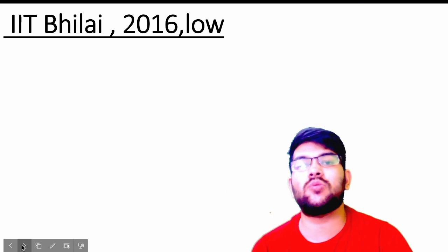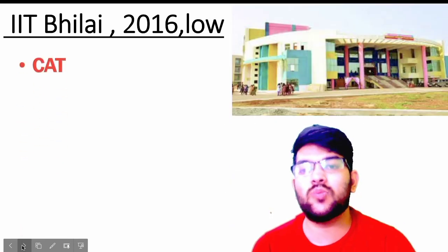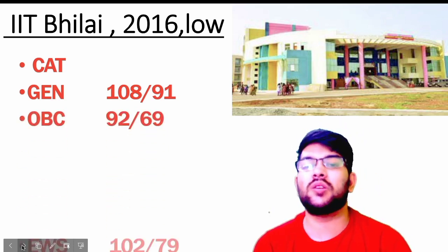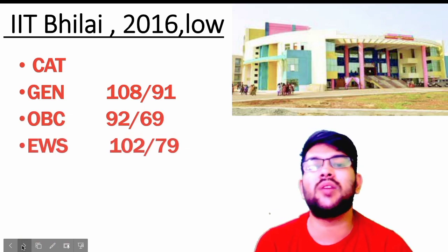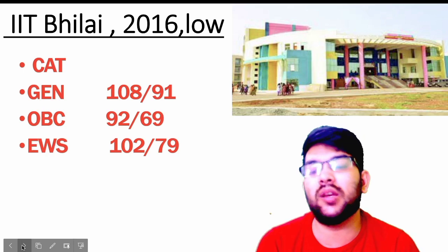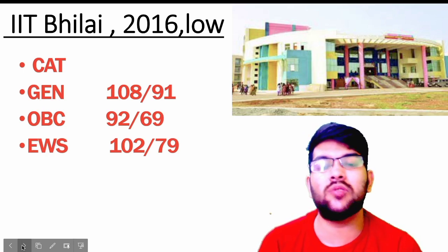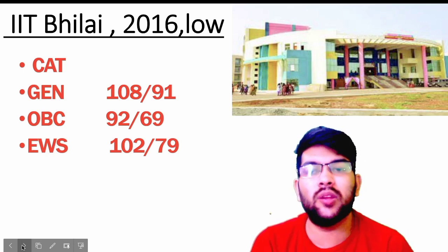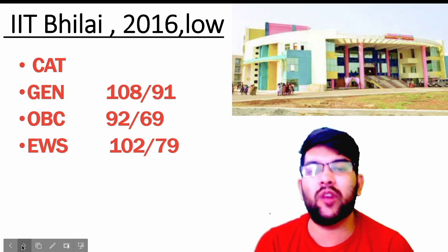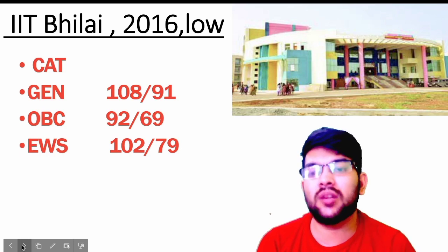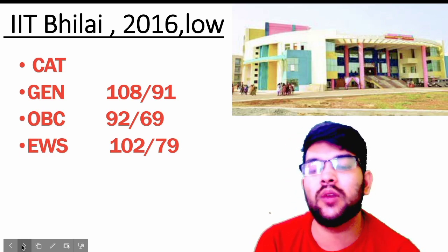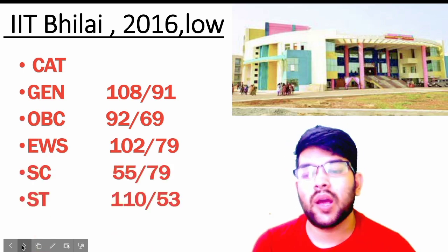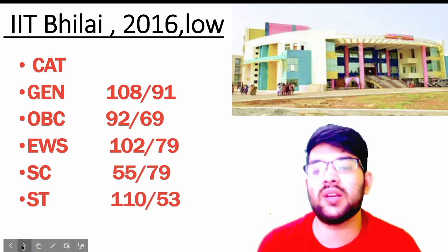Now for IIT Bhilai, established in 2016 — I think this is the lowest possible IIT if you compare it with the rest of the 22 IITs. For general, 108 and 91 marks; OBC, 92 and 69 marks; EWS, 102 and 79 marks. You may think: if it is a lower IIT, why do I need to score 108 marks and not 80 or 70? Because the lowest possible branch means the lowest branch of this college, not another college. These newer colleges don't have branches like material science or other very low-demand branches — they only have standard core branches. For SC, 55 and 79 marks; and for ST it is 60 and 53 marks.